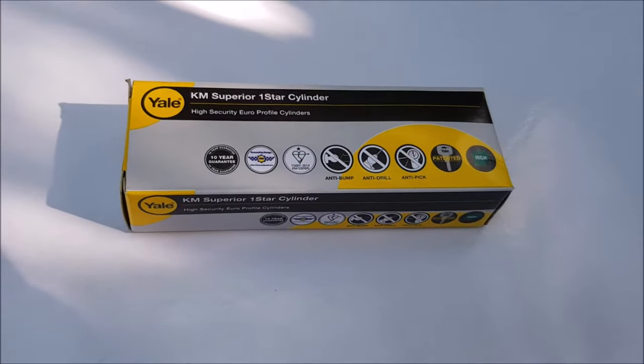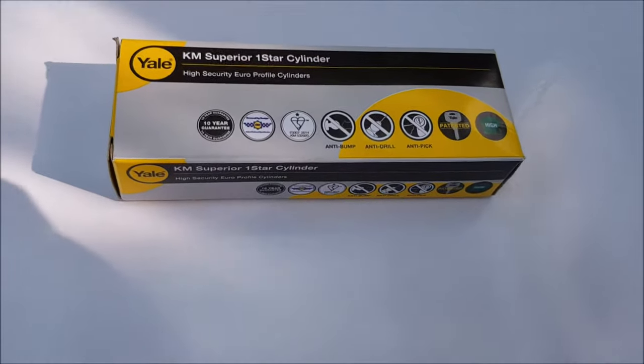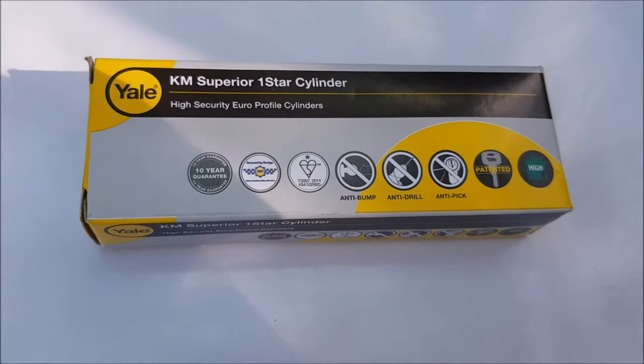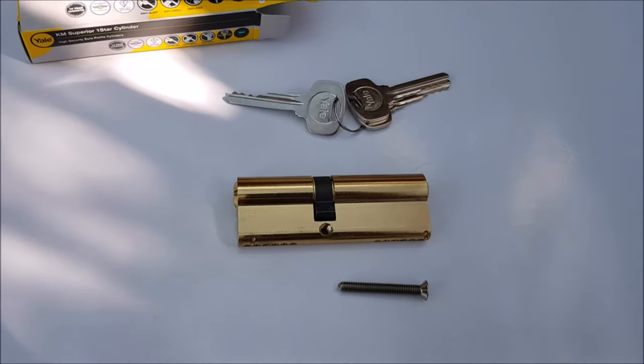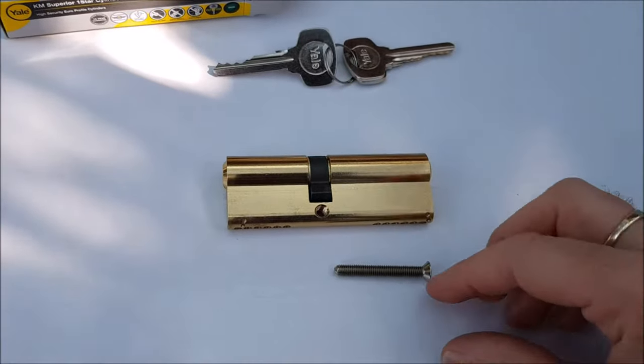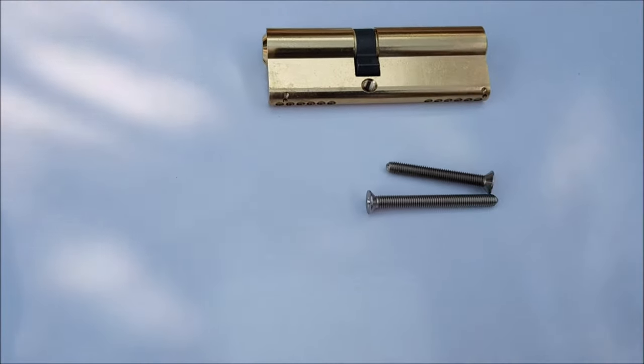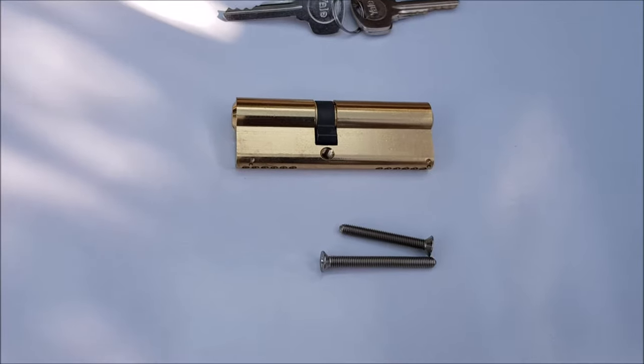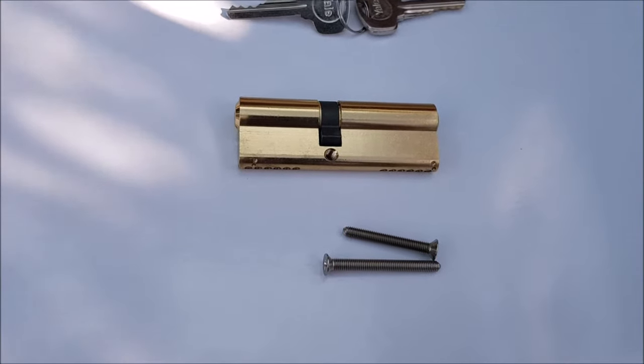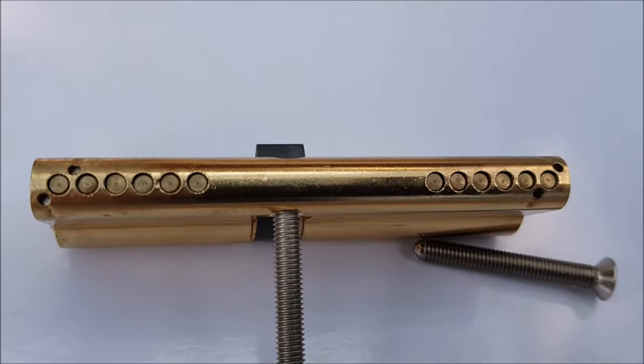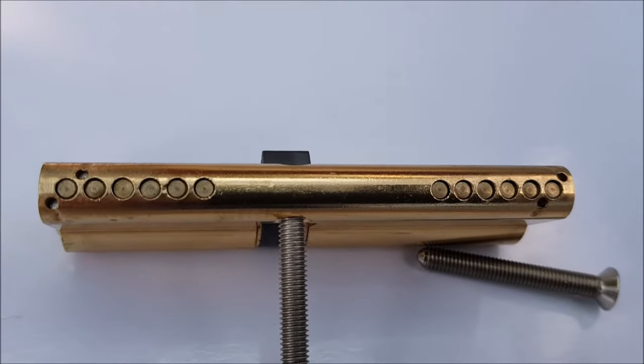So this is the product I've bought to replace the barrel. It's a Yale one-star cylinder with a 10-year guarantee. Here it is, it comes with three keys and it actually came with two bolts as well. If they don't fit the exact sort of length I'll just use the old one. This one looks like it's a six pin instead of five pin which I'm guessing is better.